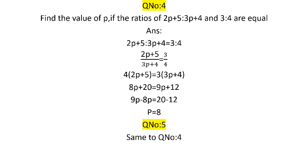Question number 4 میں دیا ہے (2p+5):(3p+4) = 3:4، p کی value find کرنی ہے۔ Ratio کو fraction میں لکھیں اور cross multiply کریں: 4(2p+5) = 3(3p+4)۔ 8p + 20 = 9p + 12، تو 9p - 8p = 20 - 12، p = 8۔